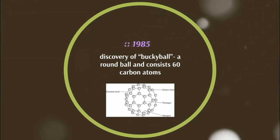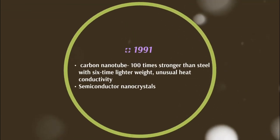In 1985, the discovery of the buckyball occurred — a round ball consisting of 60 carbon atoms. In 1991, the carbon nanotube was introduced; it is 100 times stronger than steel with six times lighter weight and unusual heat conductivity. Semiconductor nanocrystals were also discovered — tiny light-emitting particles on the nanometer scale, developed for broad applications in solar energy conversion, molecular and cellular imaging, and ultra-sensitive detection.